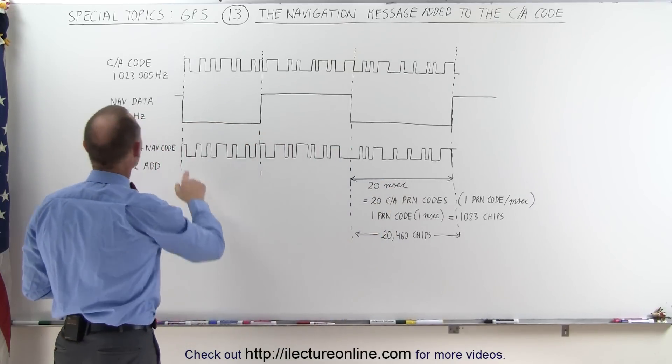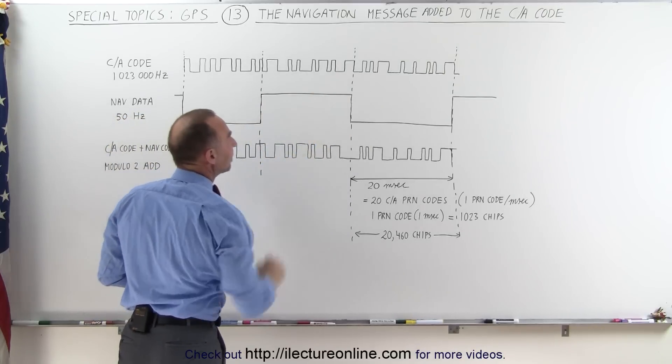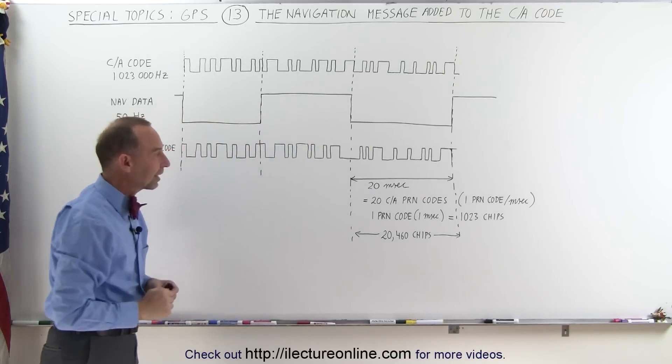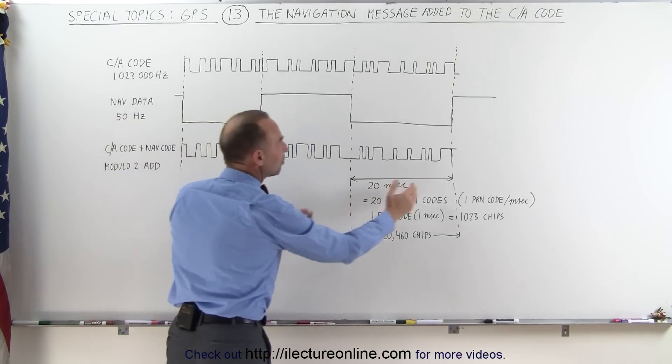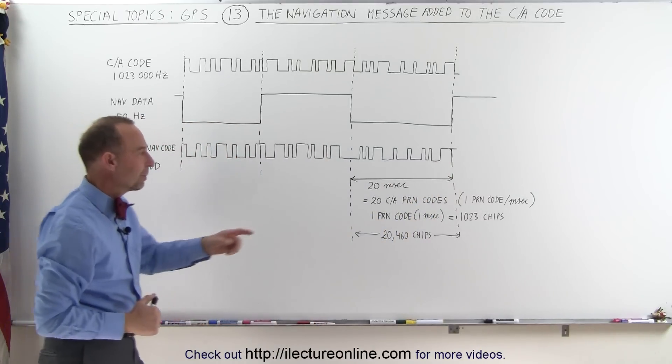So notice that if this runs at 50 hertz, then we get 50 of these bits per second on the NAV data, which means that each bit takes a period of 20 milliseconds.